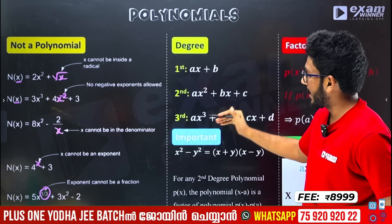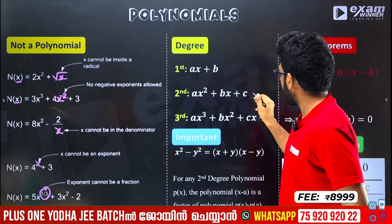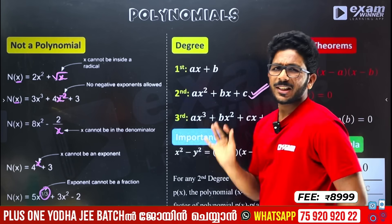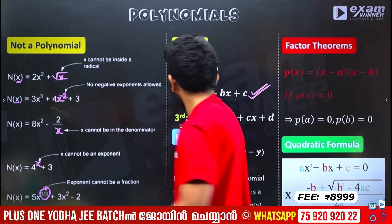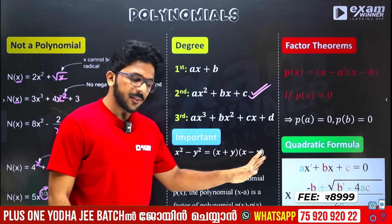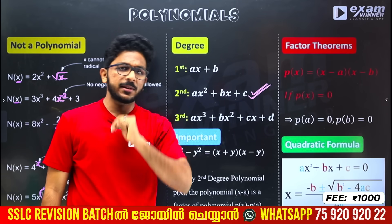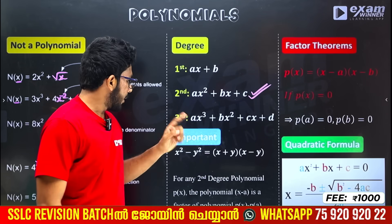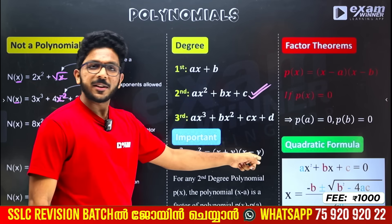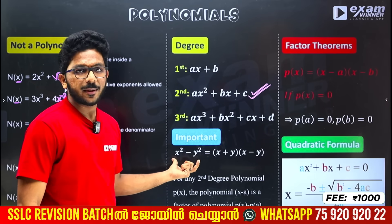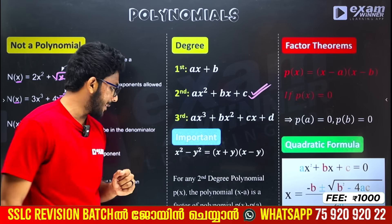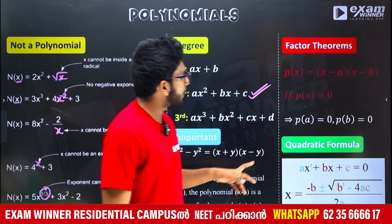First degree, second degree, third degree — you will have names for these in the textbook. The important identity is x² minus y². The first question uses this: x plus y into x minus y equals x² minus y².